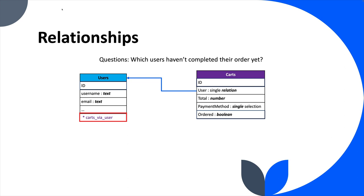It would be easy if we had a link from the users table to all the carts they own - that would be navigating forward. But we don't have that. Starting from the users table, we don't have a link going to their shopping cart; we only have the carts table coming back to the user. What if we had a dynamic field - I'll put an asterisk since it's not a real field - called 'carts_via_user', giving us all carts for this user via the user field in the carts collection.